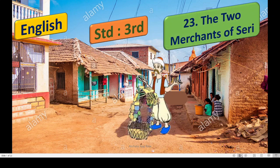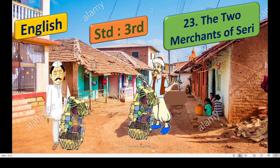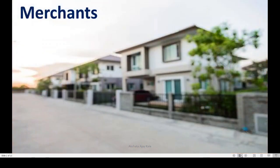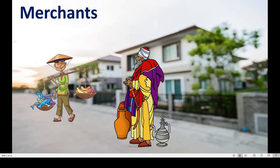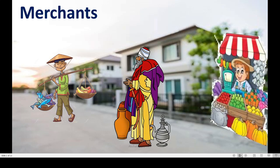You can see here the merchants — it is two merchants. First we will try to understand what is the meaning of merchant. Merchants means — see the picture. I hope you understood the meaning of the merchant. Merchant means a person who sells any articles or any materials.